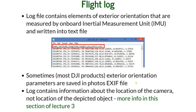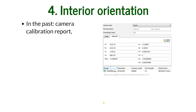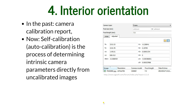The flight log contains information about the location of the camera, not the location of the depicted object. There's a link to lecture three if you need a reminder on that distinction. As for interior orientation: in the past we needed that written in a so-called camera calibration report. Right now, auto-calibration is performed during structure from motion — it self-calibrates the intrinsic camera parameters from uncalibrated images.